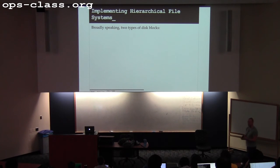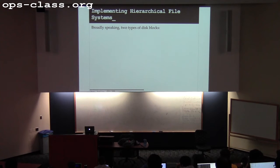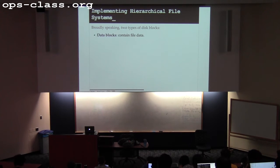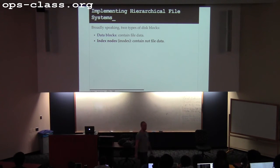File systems essentially consist of an on-disk data structure. If you have a file with a string in it, that string is somewhere on disk — but the file name, permissions, and all other metadata also have to be on disk. We can divide disk blocks into two categories: data blocks, which store content and have a one-to-one mapping with places in an actual file, and index nodes — broadly called inodes — which contain everything else: something other than file data.